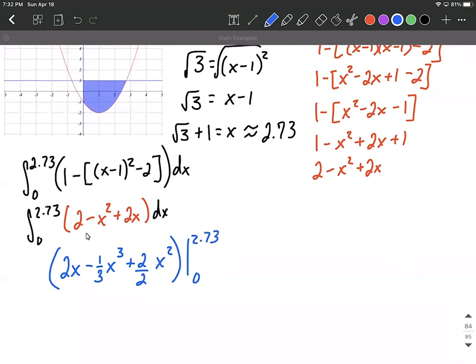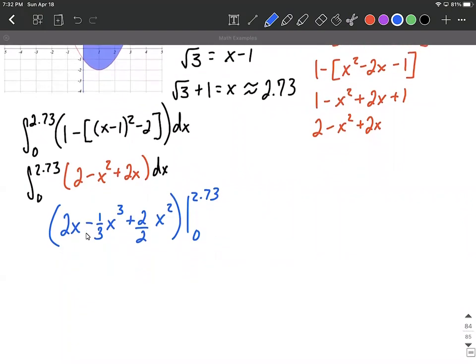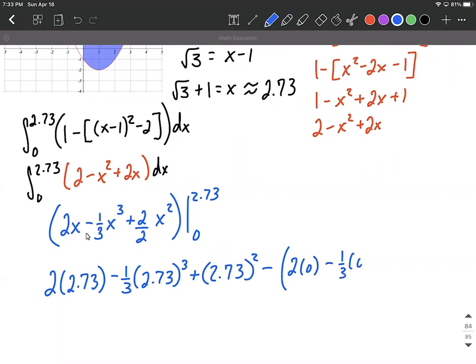To finish this up, now that we've done our antiderivative, we just need to plug in the top value: 2 times 2.73 minus 1/3 times (2.73)³. The 2 over 2 makes 1, so I'm just going to go (2.73)² minus, now we need to plug in the bottom value.